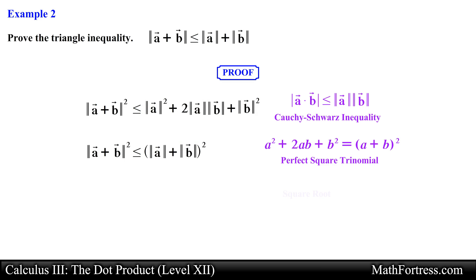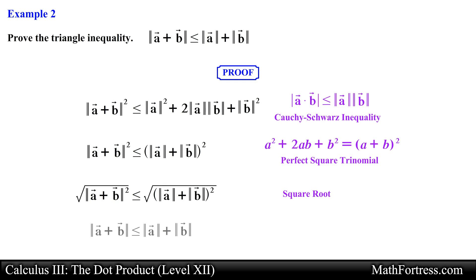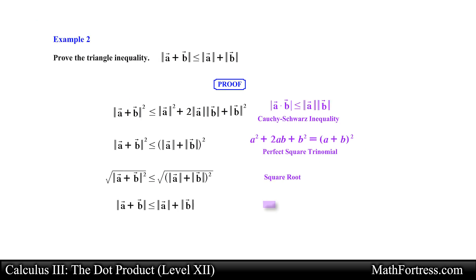The last step is to take the square root of both sides. Doing that we obtain the triangle inequality, and this ends the proof.